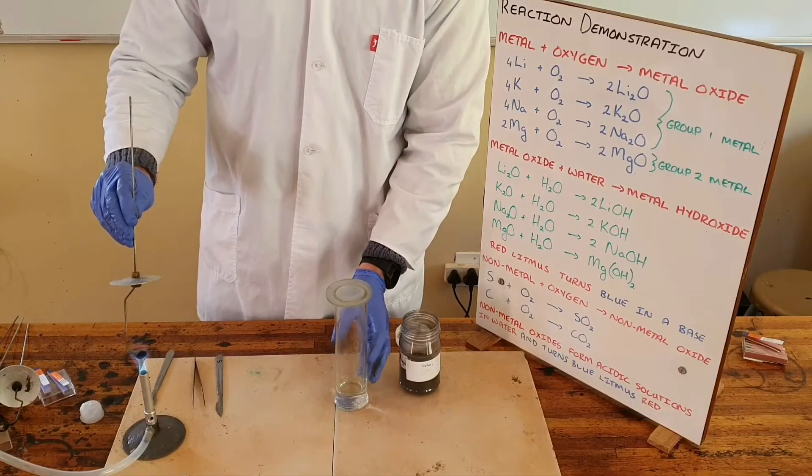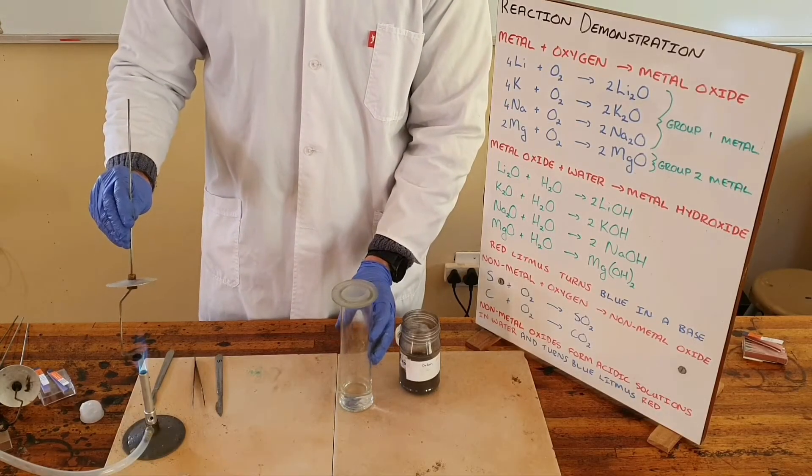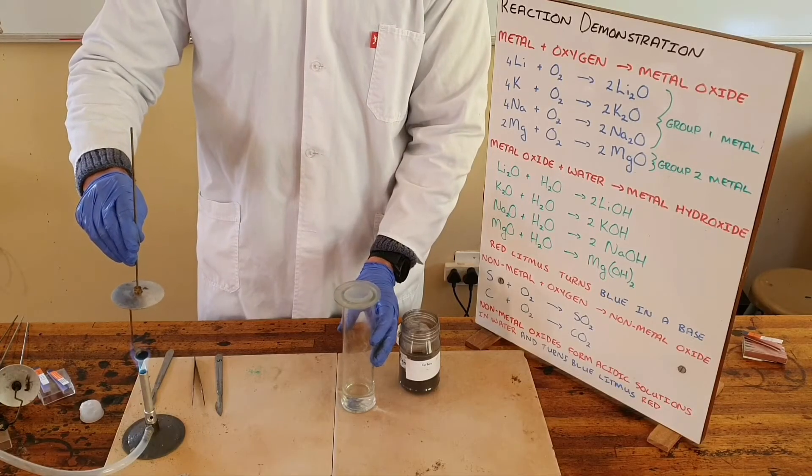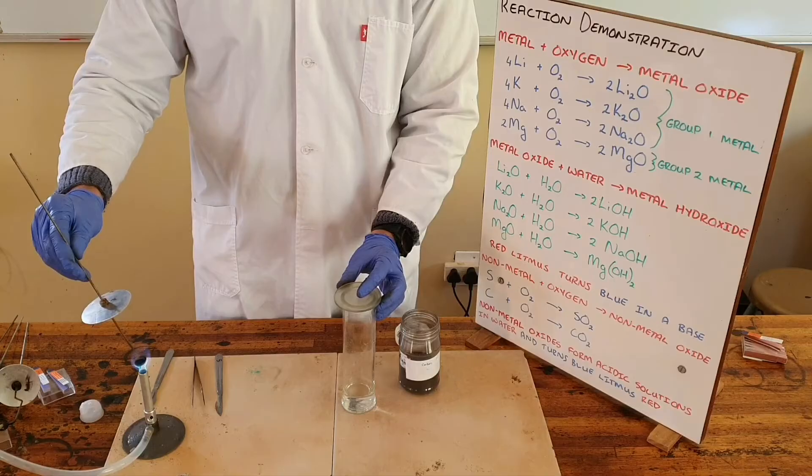Carbon is typically quite unreactive and we can leave it over the Bunsen burner to heat up. Once it ignites we can move it across to the gas jar which contains oxygen.